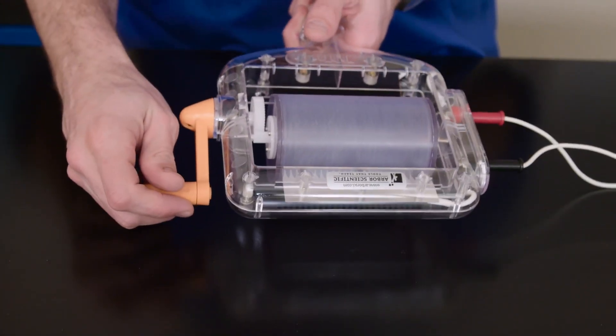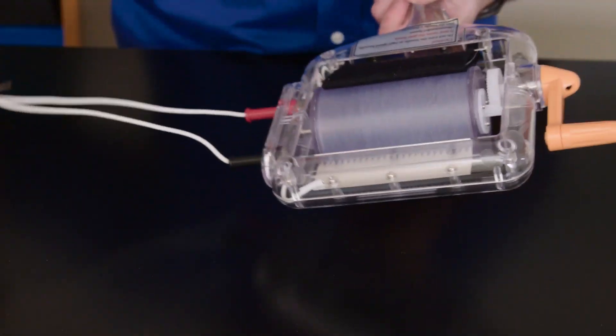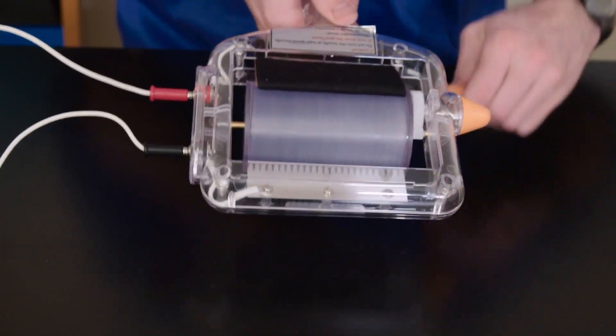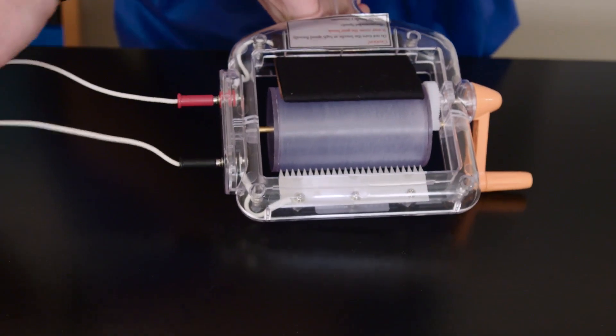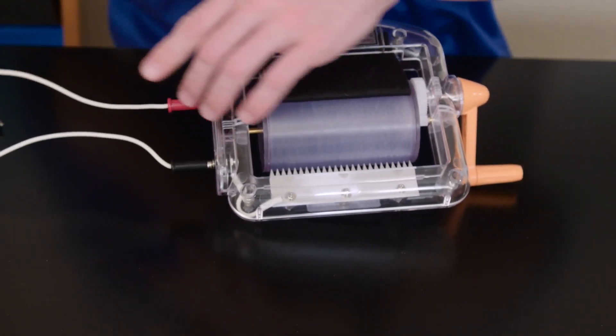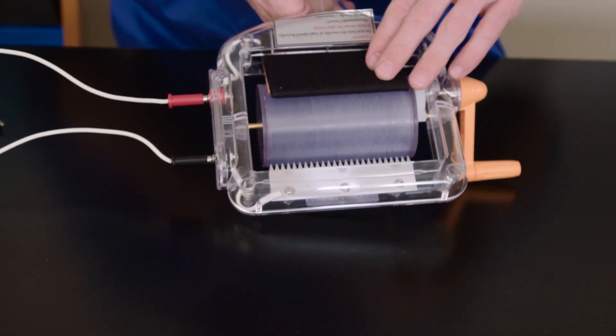The transparent body shows how it works. Negative charge builds up on the barrel and is collected by this metal comb, which goes off to the lead. The other lead grounds the felt pad and so it builds up the opposite charge.